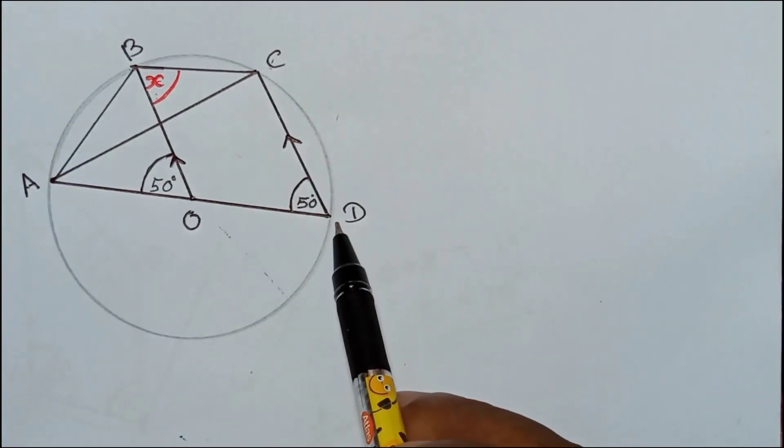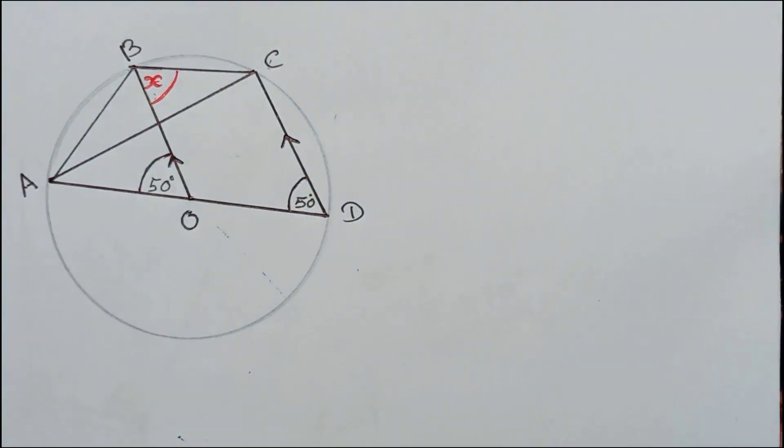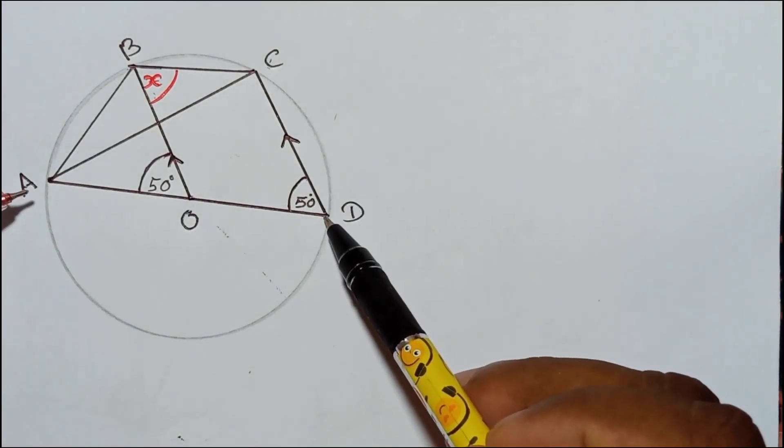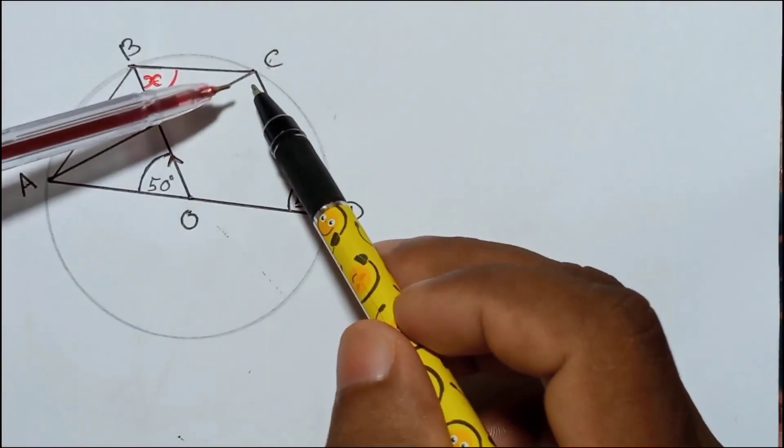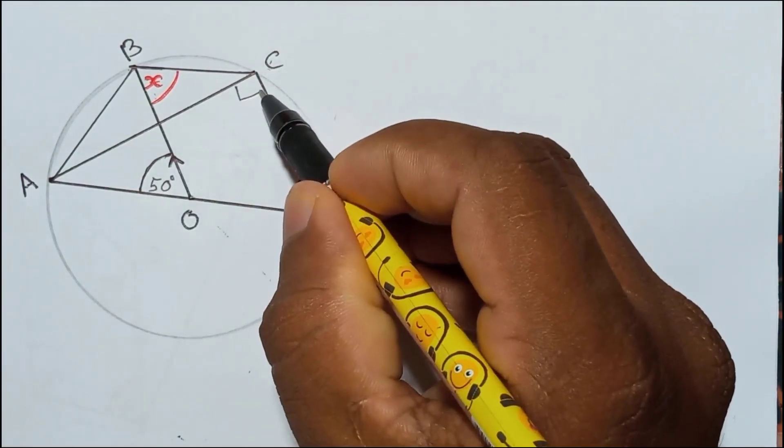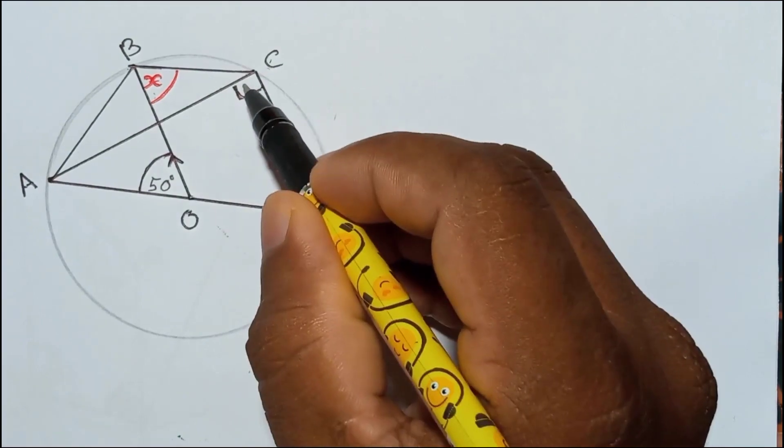It is a diameter, so that's why this diameter subtended angle, that means from A and D, this diameter subtended angle, normally we call semicircle angle, this must be 90 degrees. We learned that. In a semicircle, this diameter subtended angle is 90 degrees.